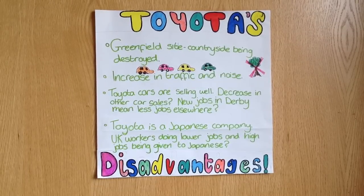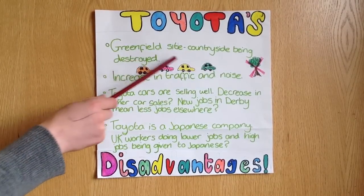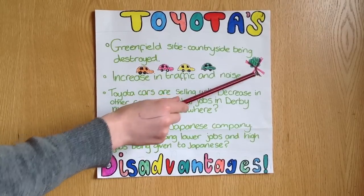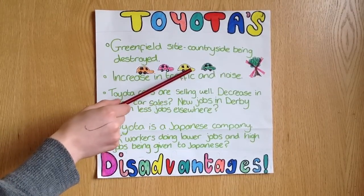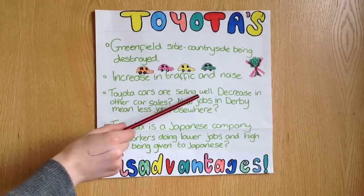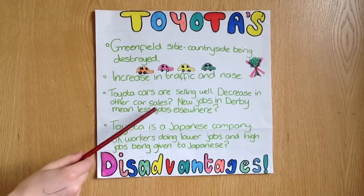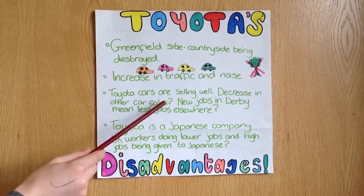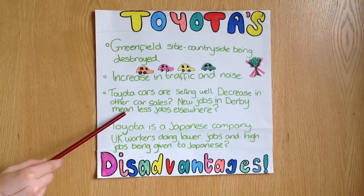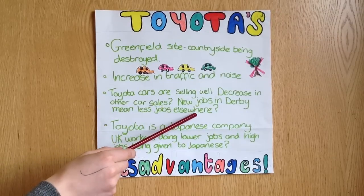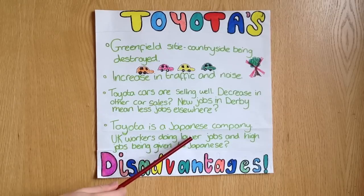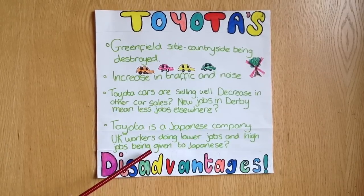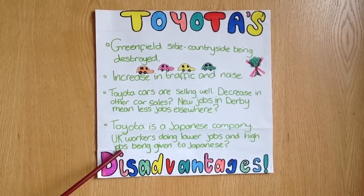Here are a few disadvantages of Toyota being in the Burnaston area. Toyota is a greenfield site, so the countryside is being destroyed by them building there. There's an increase in traffic and noise in the area. Toyota cars are selling well, so there might be a decrease in other car sales. New jobs in Derby means that there are fewer jobs elsewhere. Toyota is a Japanese company — it's possible that UK workers are doing the lower jobs and just putting the cars together, while the higher jobs are being given to the Japanese.